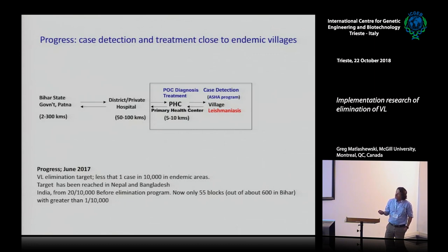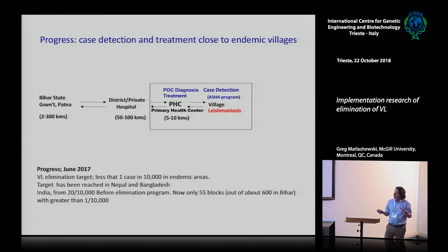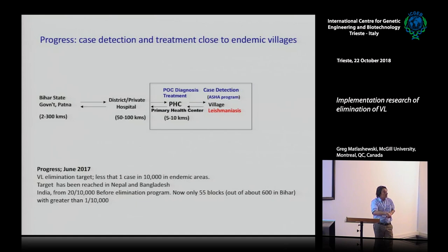Nepal and Bangladesh have reached the elimination target, but India has not. In my opinion, India is going to have a very difficult time achieving the elimination target. Currently, out of 600 blocks or PHCs in Bihar, 55 are still above the threshold. Bringing those 55 down below the threshold is going to be very challenging — that's where things stand right now.